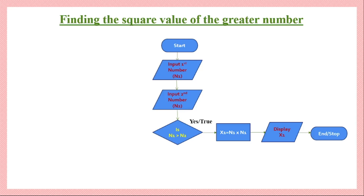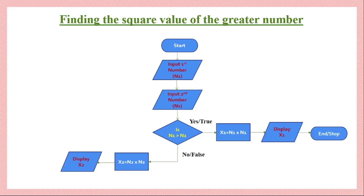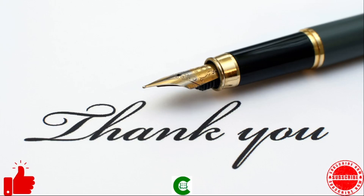But if the outcome of the decision is no, that signifies N2 is greater than N1. So we take N2, calculate its square value represented as X2, then display the value of X2 — the square of N2, which is the greater number among the two given numbers. Once X2 has been displayed, that is the end of the process, and we use the corresponding end symbol.